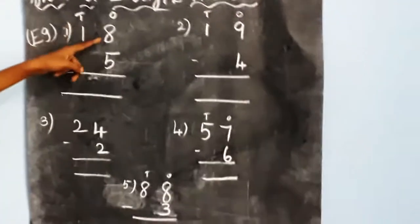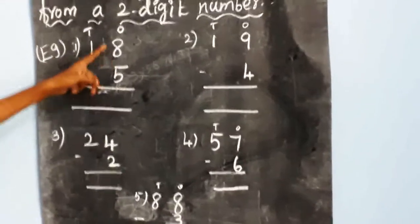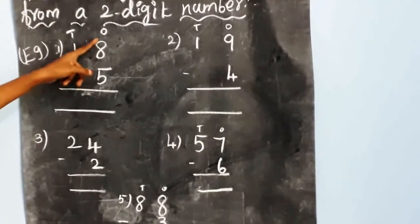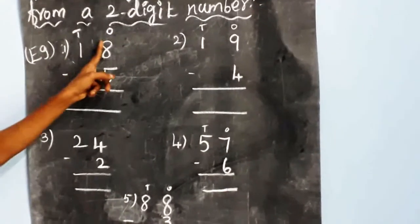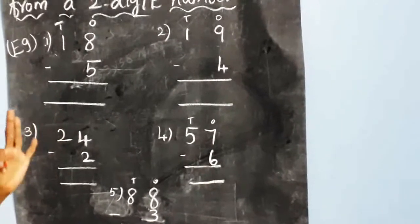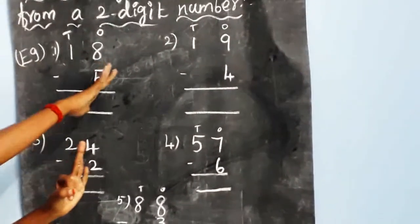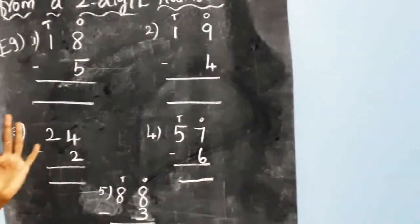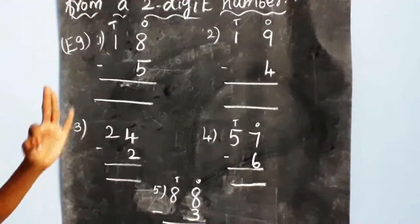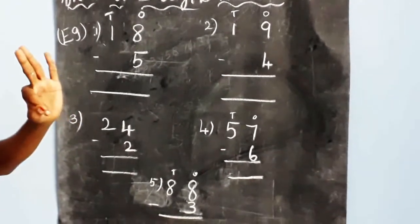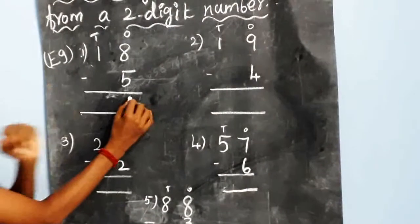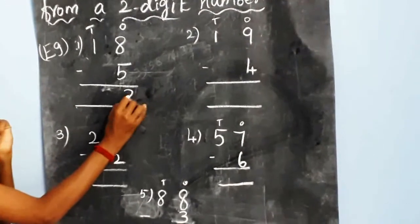You can subtract the ones place first. Here, eight minus five. Take a finger of eight and subtract five: one, two, three, four, five. The balance is three. So the ones place answer is three.